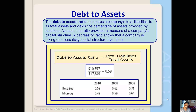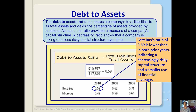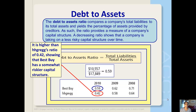The debt to assets ratio compares a company's total liabilities to its total assets and yields the percentage of assets provided by creditors. As such, the ratio provides a measure of a company's capital structure. A decreasing ratio shows that a company is taking on a less risky capital structure over time. Looking at Best Buy, their debt to assets ratio of 0.59 is lower than in both prior years, indicating that its capital structure is decreasingly risky because they're using less financial leverage.